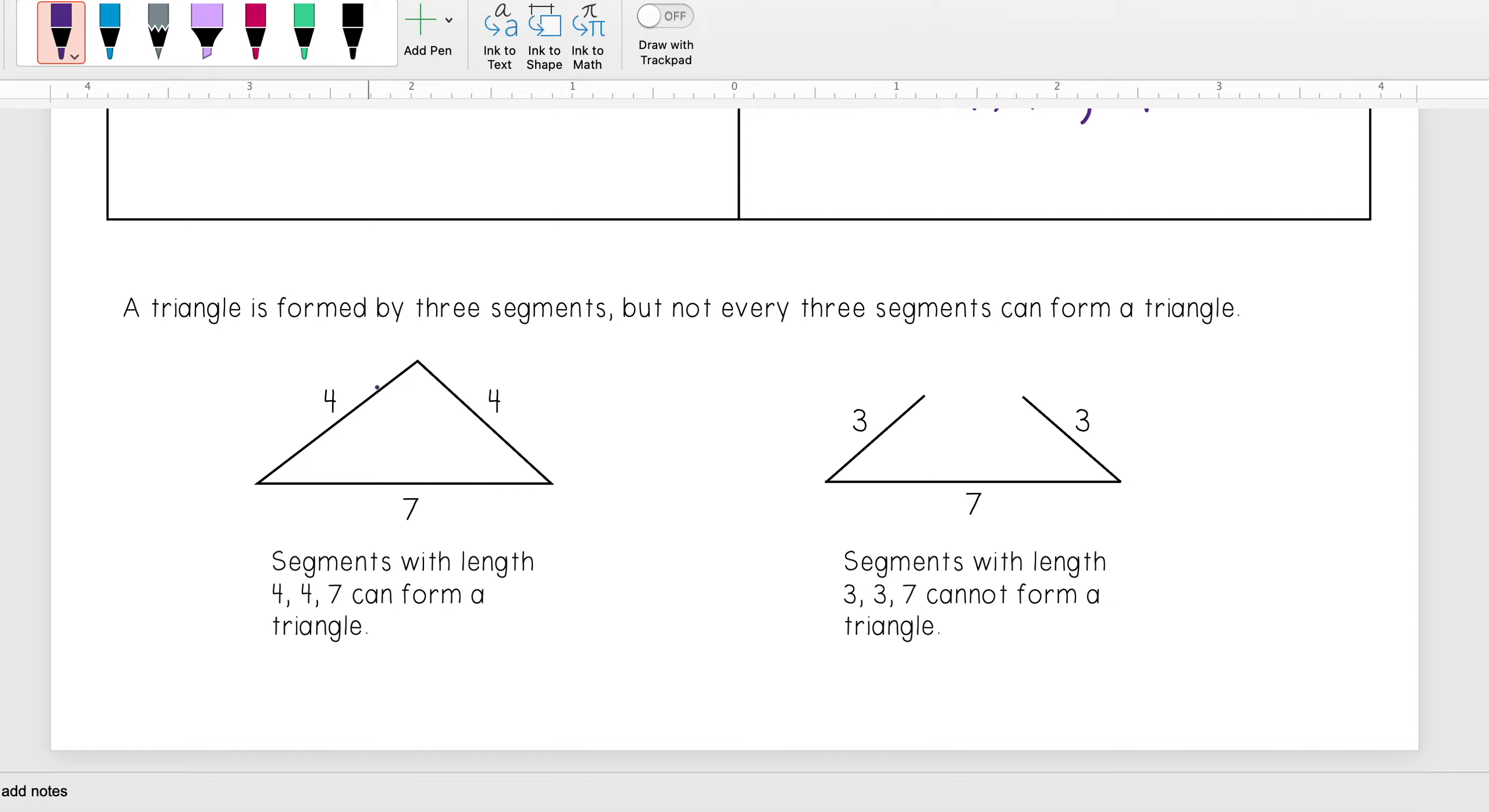For instance, I see that this triangle with side lengths of 4, 4, and 7, they can form a triangle.